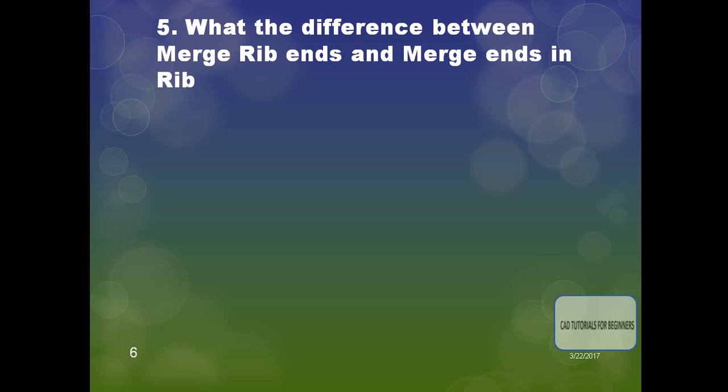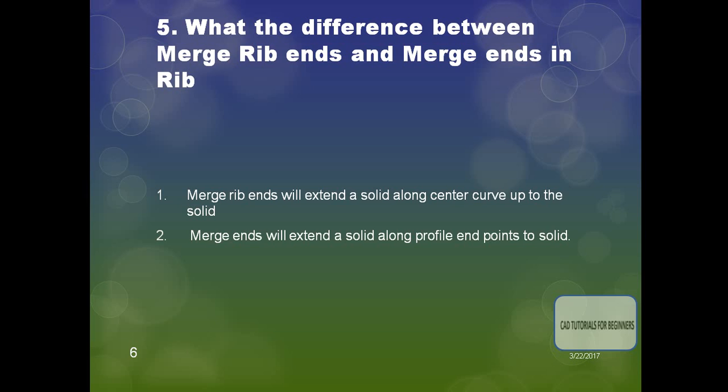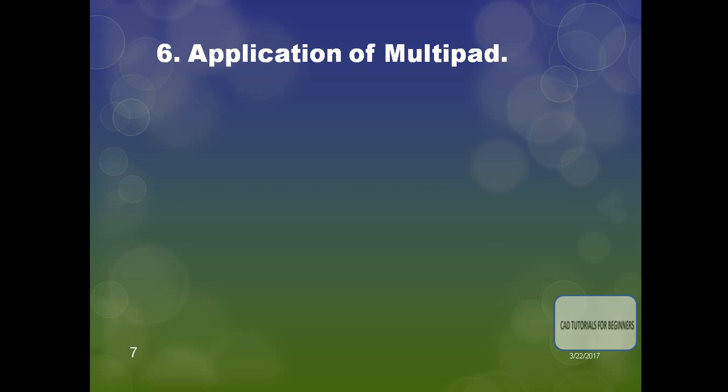The next question: what is the difference between Merge Rib Ends and Merge Ends in Rib? Merge Rib Ends will extend the solid along the center curve up to the solid. Merge Ends will extend the solid along the profile end points to the solid. These are the two differences between the Merge Rib Ends and Merge Ends in Rib options.